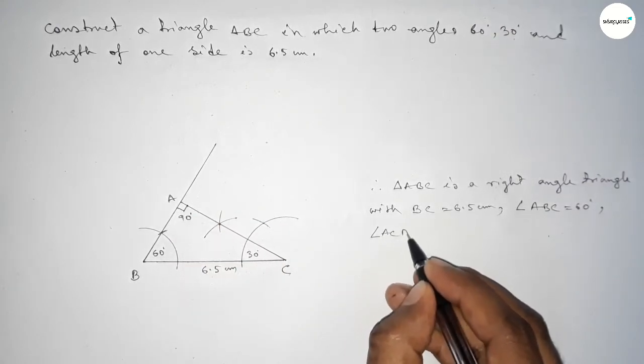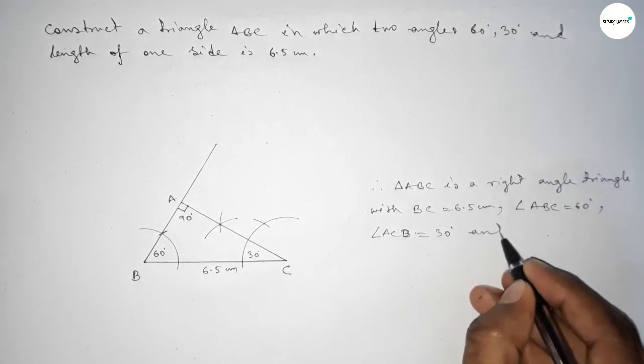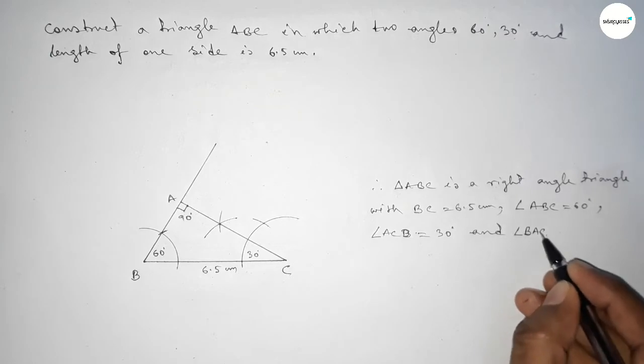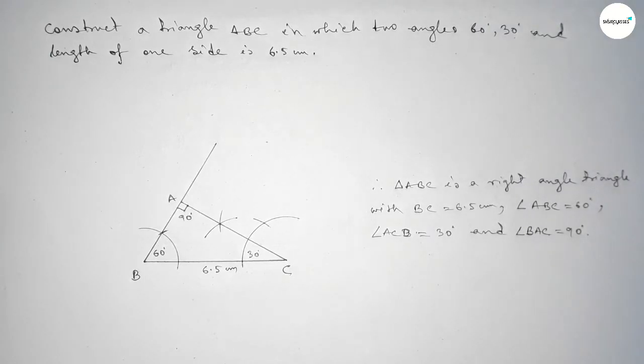Angle ACB equal to 30 degrees, and angle BAC equal to 90 degrees. So that's all, thanks for watching, please share it with your friends.